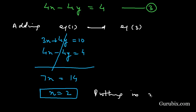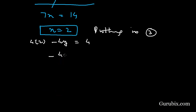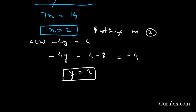We substitute x = 2 into equation number 3: 4(2) - 4y = 4, which gives -4y = 4 - 8 = -4, so y = 1. This is the solution from the elimination method: x = 2, y = 1.